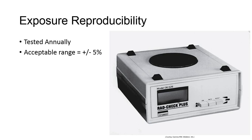Exposure reproducibility is defined as the ability to repeat the same overall technique settings and receive the same result in exposure. Again, you can use the ion chamber to measure the dose put out by the X-ray tube. Ten exposures at the same settings are recommended, recording the ion chamber reading. A variation of plus or minus 5% is acceptable, and this should be performed annually.